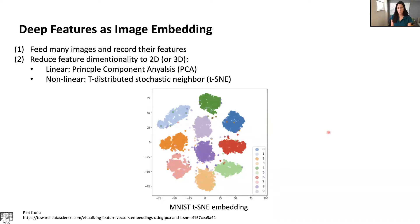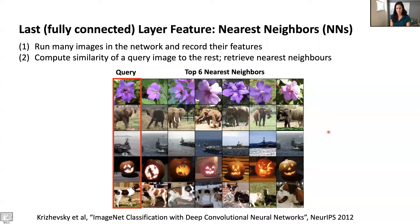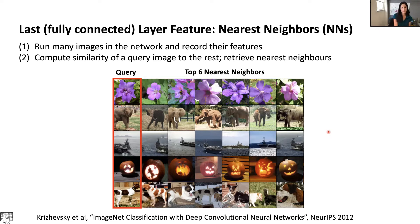Student question: is it possible to do nearest-neighbor retrieval on the softmax distributions instead, and would it be beneficial? The answer is probably not — because with a perfect classifier, the softmax would give a one-hot vector to all elephant images, collapsing them to the same cluster. Going to the layer before softmax preserves more information in those features before the linear classifier and softmax normalization.